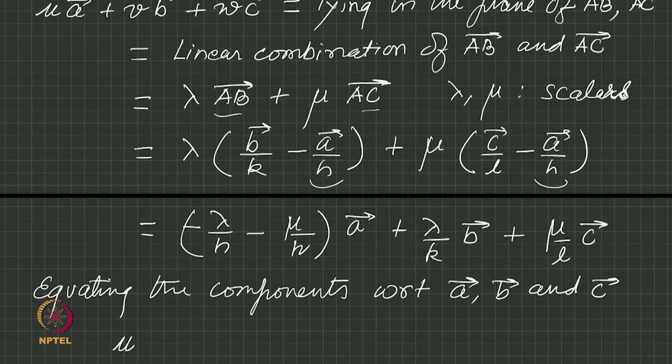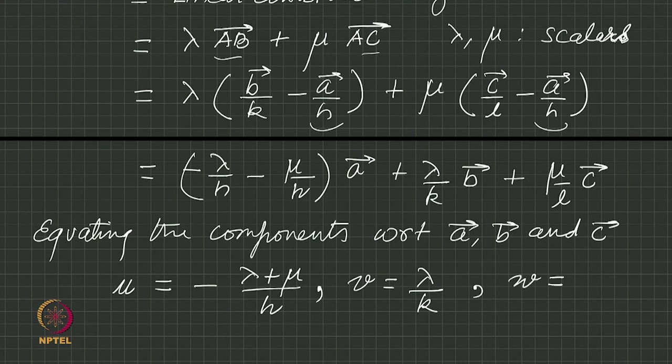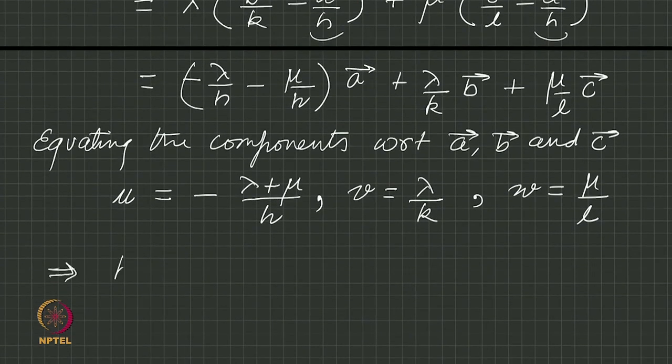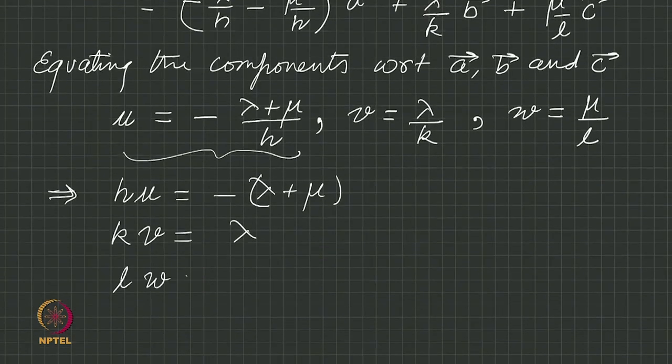We get u = (-lambda + mu)/h, v = lambda/k, and w = mu/l. Second equation is lambda = kv, third is mu = lw.